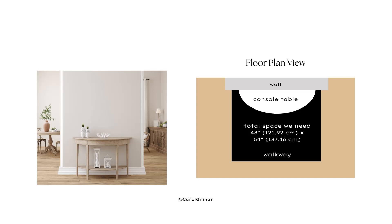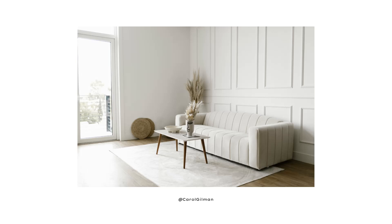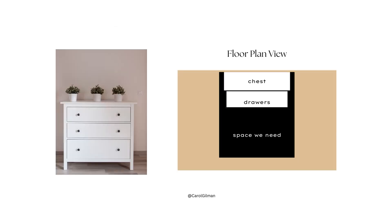Another thing to think about is that some pieces of furniture are stationary, like a sofa — we plan for it in a specific spot and it just stays there. But other pieces of furniture are stationary yet have movable parts. A chest of drawers stays in a certain spot, but we need to make sure we have space in front of it to pull out the drawers and access what's inside.